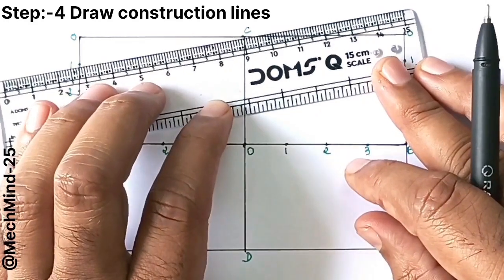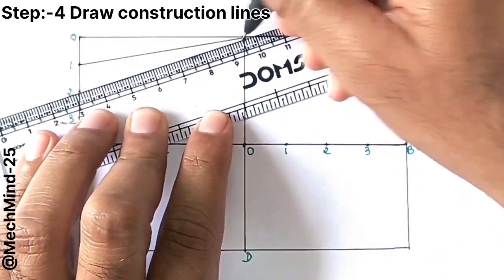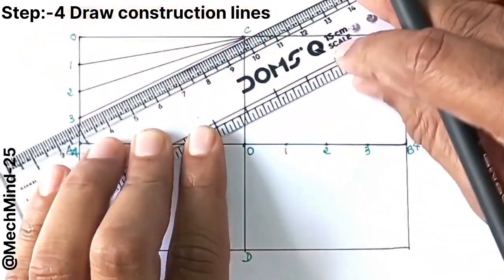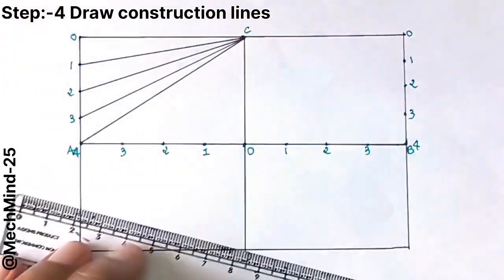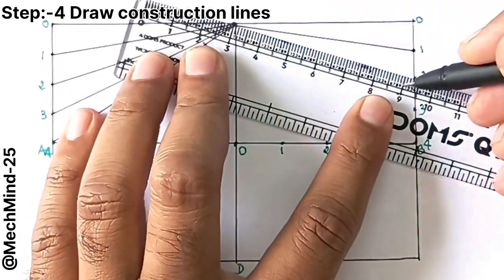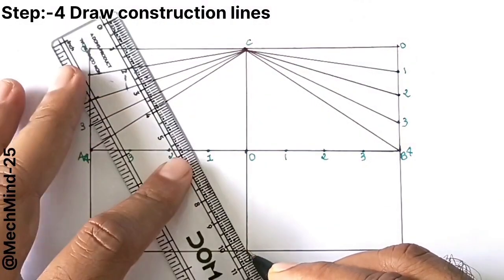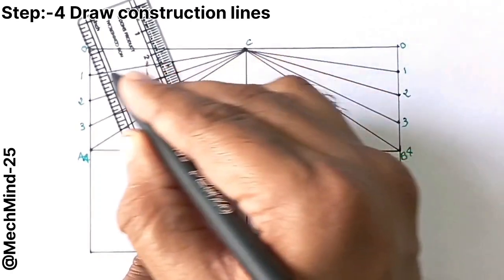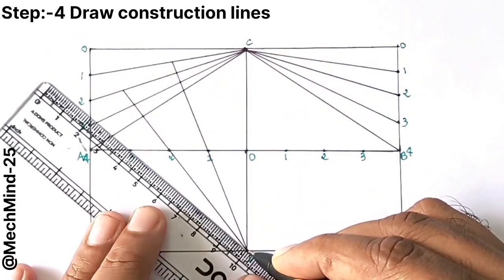Now join point C with points 1, 2, 3 and 4 on the line OA and OB. Take the lines from point D passing through point 1 and extend it until it reaches line C1 to get the intersection point. Follow the same process for the remaining points on both sides of the line CD.